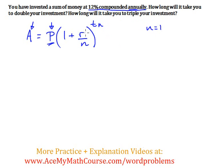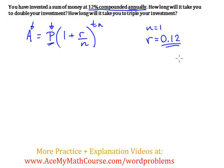And R, the rate, is just 12%, which I will write as 0.12. You can just divide 12 by 100 to get the rate. And T is time. In this case, that's what we want to solve for — we don't know what T is.